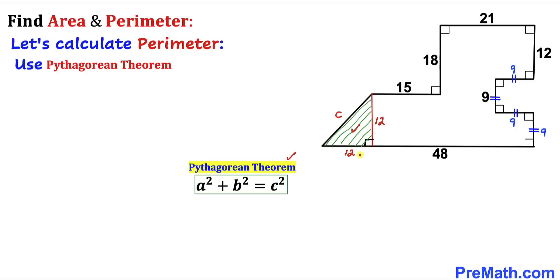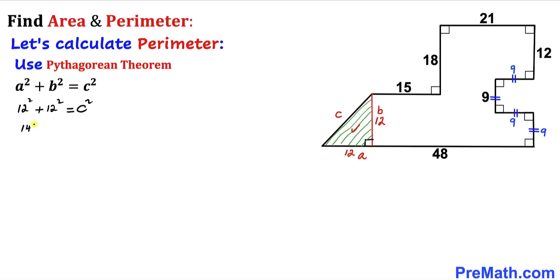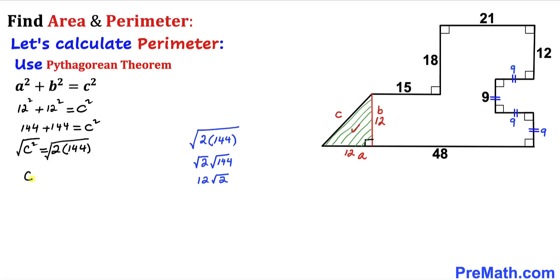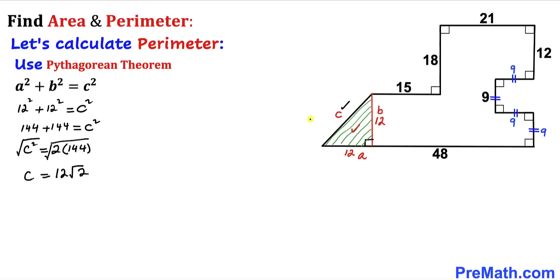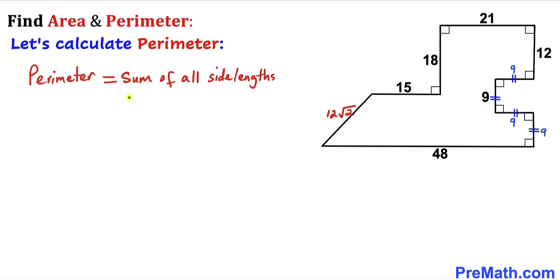Let me call the longest side c, and the other two sides a and b. Filling in the formula: a is 12, so 12², and b is 12, so 12², equals c². This gives us 144 plus 144 equals c², or c² equals 2 times 144. Taking the square root of both sides, c equals 12 times the square root of 2.